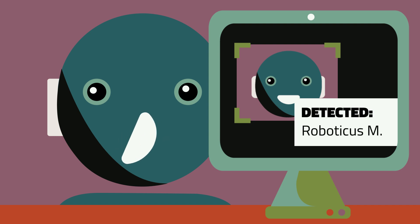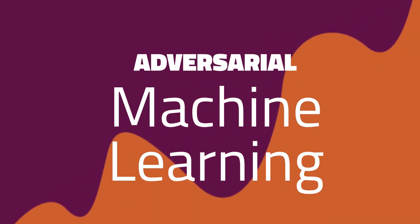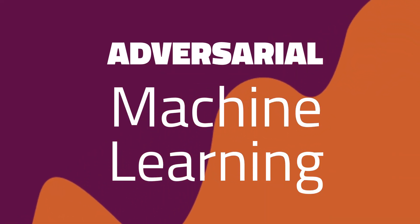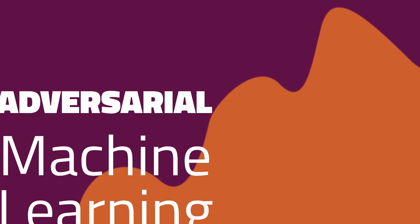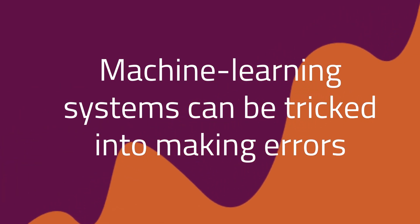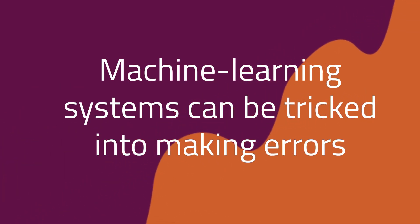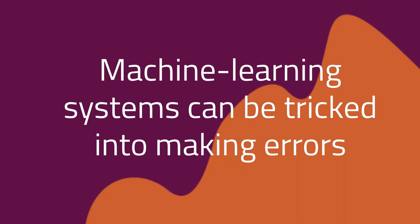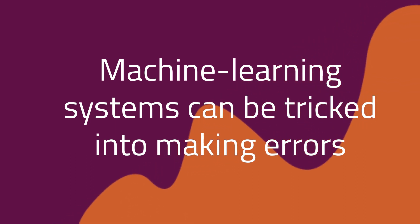But for all the benefits, there's a problem with machine learning that no one really talks about. It's called adversarial machine learning — a term cyber security researchers use to explain how machine learning systems can be tricked into making errors.